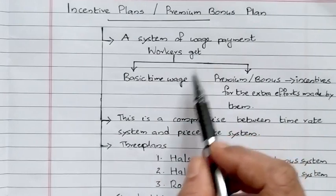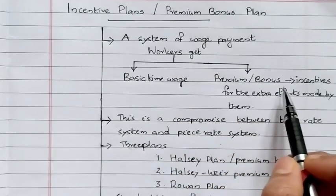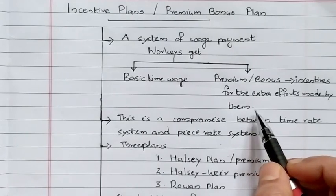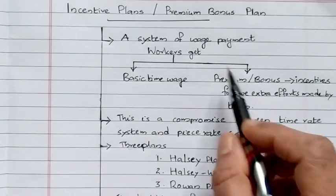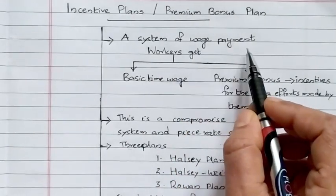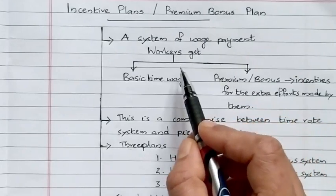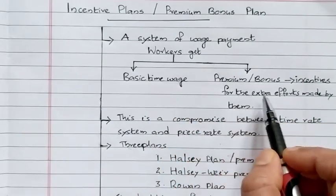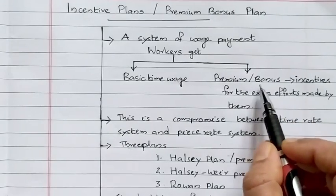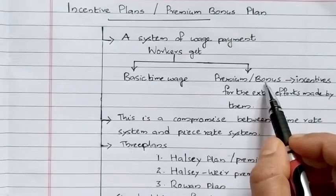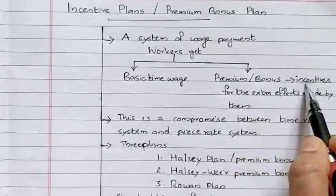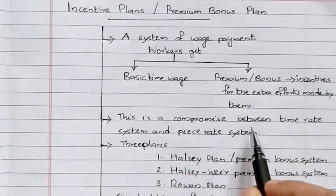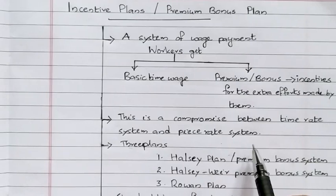Under the Incentive Plans or Premium Bonus Plan system, workers get Basic Time Wage and a Premium or Bonus for the extra efforts made by them. Workers are provided time-based wages, and they receive a bonus or premium incentive for extra efforts. We can say that this is a compromise between the Time Rate System and the Piece Rate System.